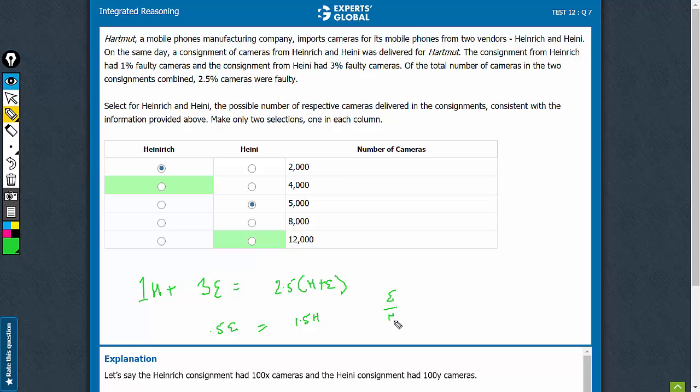Therefore, E upon H is equal to 3 upon 1. So we need to look at a pair of choices that gives you a 3 to 1 ratio. 4,000 and 12,000, this is the correct pair of answer choices. There is no other combination that gives you a 3 by 1 ratio.